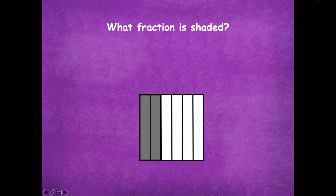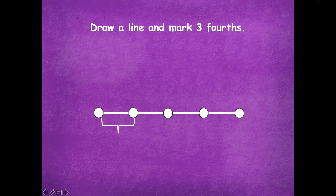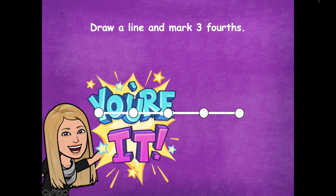Now draw a line and mark three-fourths. This one's a little tricky. The fractional unit is fourths, so I need four equal parts. Here I have one, two, three, four. Remember, when splitting up a line it's about how many parts are in between the marks, not how many dots you drew — that counts as your four equal parts. Pause the video: where would three-fourths be on that line? Count the parts in between, not the dots.